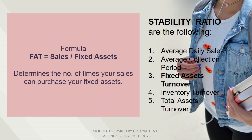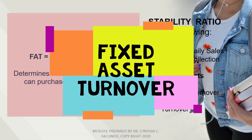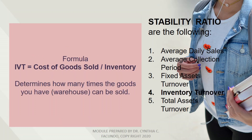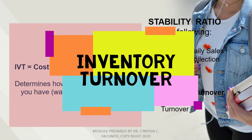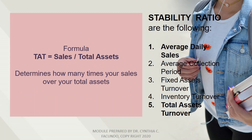Next is the PICS asset turnover. The formula is: PICS asset turnover equals sales divided by PICS asset. It determines the number of times your sales can purchase your PICS asset. Next is the inventory turnover. The formula is: inventory turnover equals cost of goods sold divided by inventory. It determines how many times the goods you have in the warehouse can be sold.